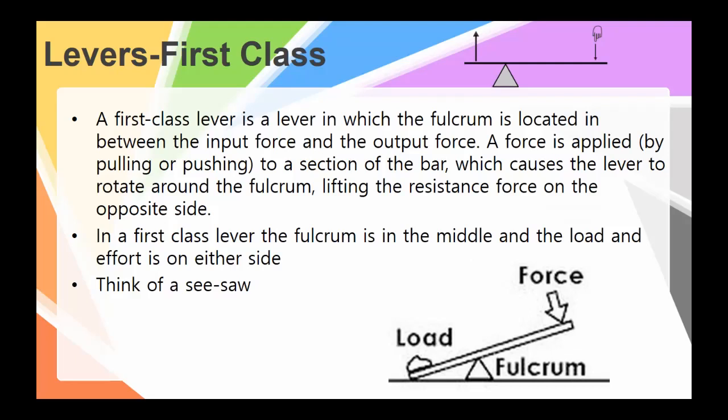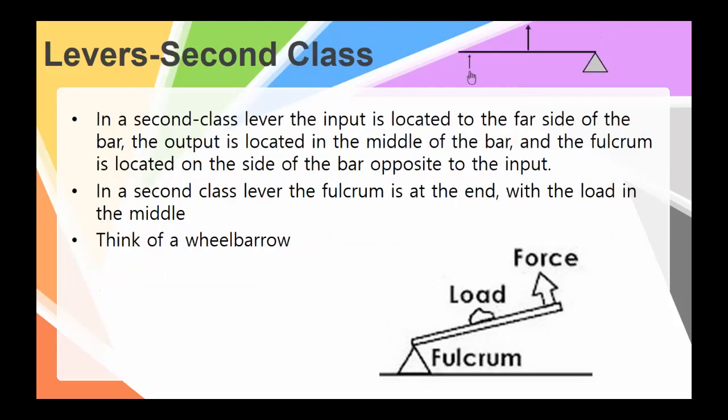Now, when we switch to the other lever types, pay close attention to where the fulcrum ends up. This is going to be a big, important piece of understanding the difference between the three types of levers. All right, so a second class lever, you'll notice that the load has changed to be in between the applied force and the fulcrum. Okay, a great example of this would be a wheelbarrow.